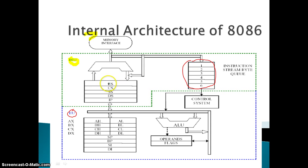The BIU has five 16-bit registers: ES (Extra Segment), CS (Code Segment), SS (Stack Segment), DS (Data Segment), and IP (Instruction Pointer). The Intel 8086 divides memory into four segments: extra segment, code segment, stack segment, and data segment. These four segment registers hold the base address of their respective segments. The Instruction Pointer is similar to the program counter in the 8085, holding the address of the next instruction to be executed.